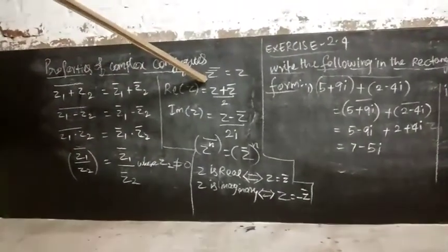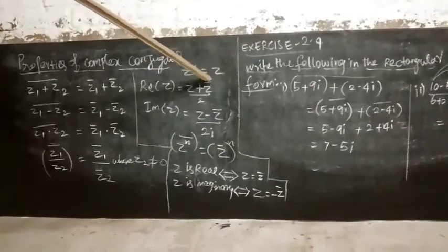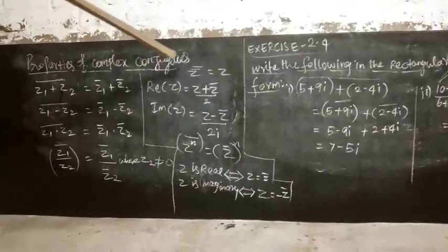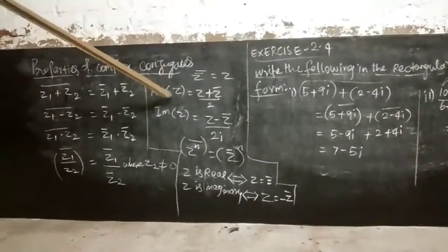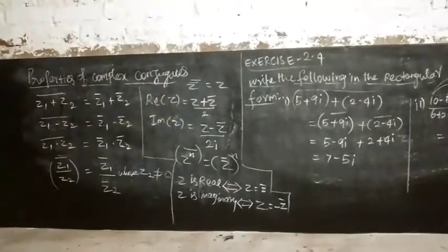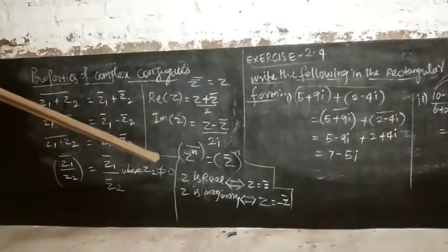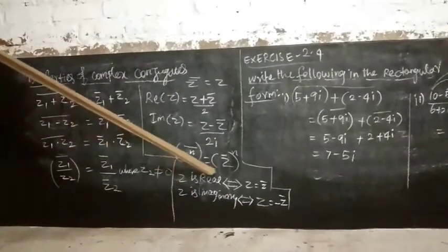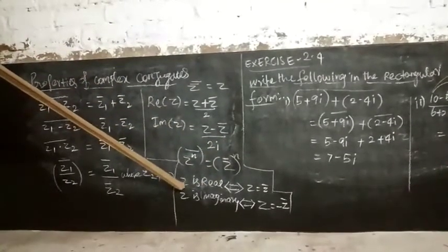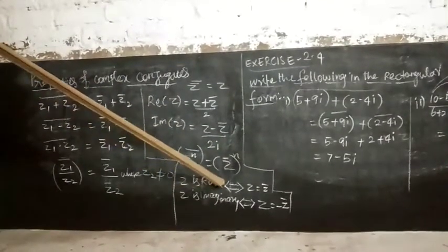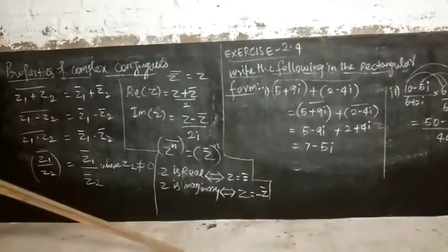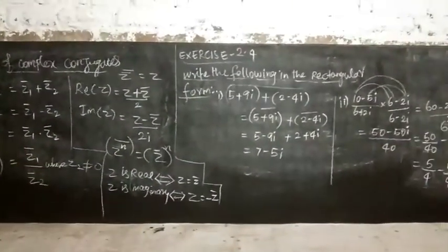Next property: z double bar is equal to z — I already mapped it separately, analogous to a transpose whole transpose equals a, same property. Real part of z equals z plus z bar by 2. Imaginary part of z equals z minus z bar by 2i. Next, z power n whole bar equals z bar power n. Also, z is real if and only if z equals z bar.